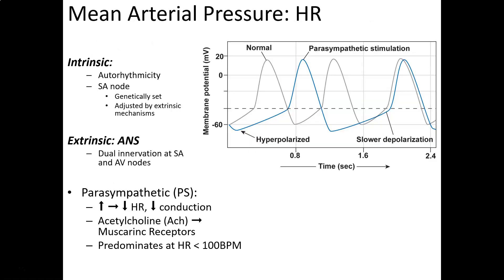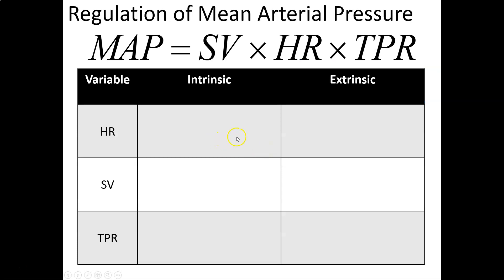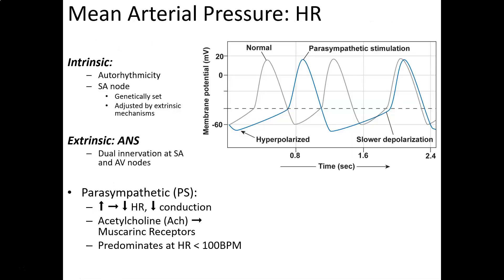We'll start with heart rate and look at how it controls mean arterial pressure. One thing to remember about this equation: if stroke volume goes up, MAP goes up; if heart rate goes up, MAP goes up; if TPR goes up, MAP goes up. So if any of those variables increase, MAP goes up, and if any decrease, MAP goes down.